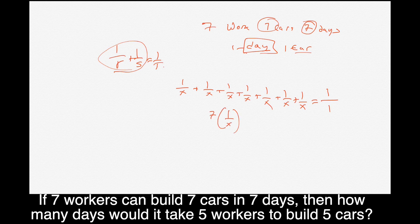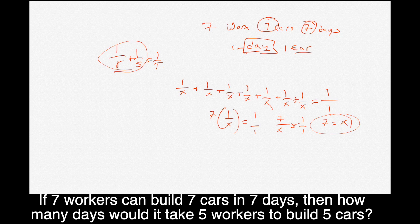So what we put down there is one. Seven one over X's equals one over one. And then so that's seven over X equals one over one. Obviously, if we cross multiply, we get seven equals X. It takes one worker seven days if he or she is doing it alone. It's going to take him seven days to do the project.